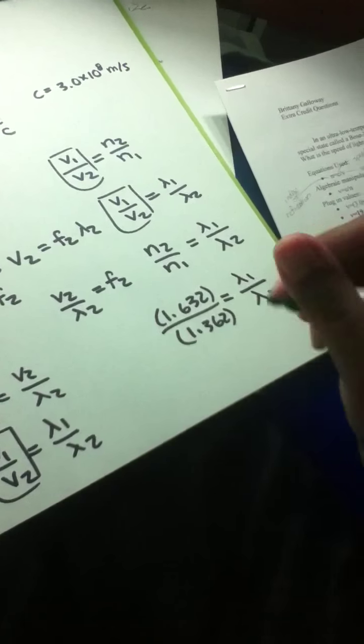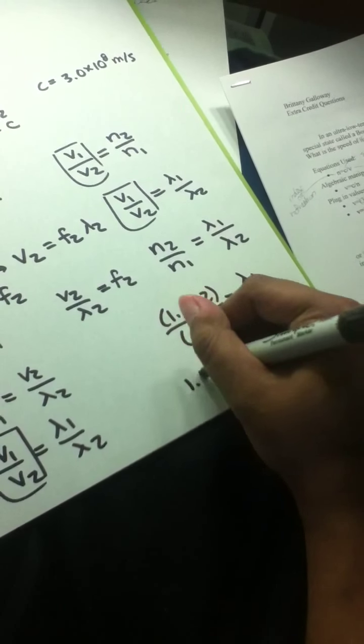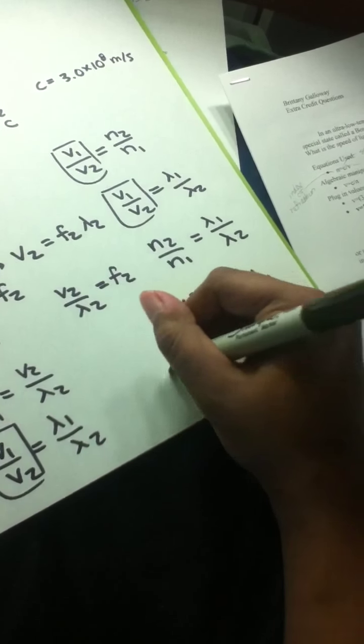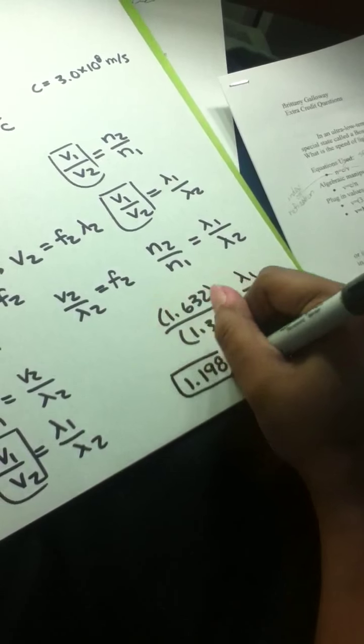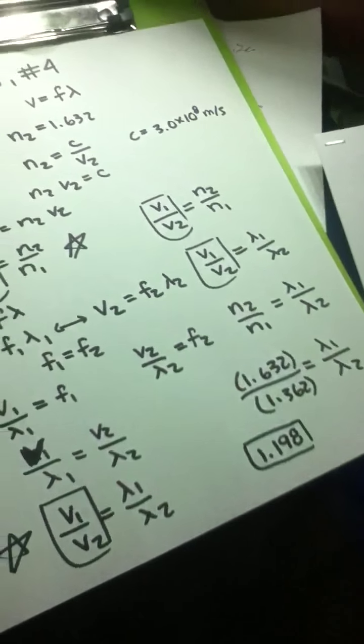Once you plug in the values for N2 and N1, you should get a value equal to 1.198. There are no units because this is a ratio.